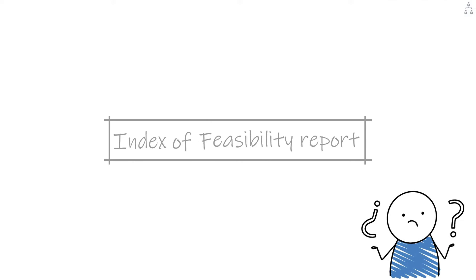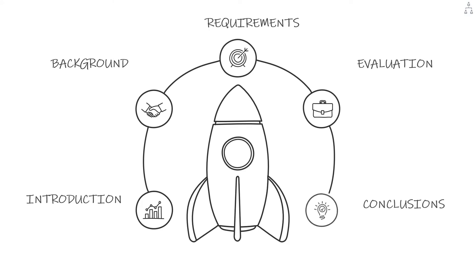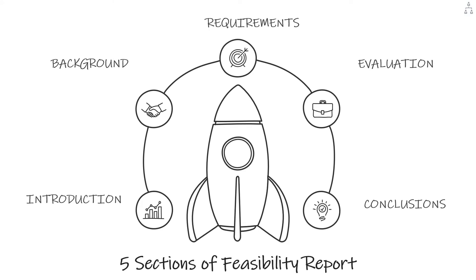So, the next question is: what is the structure of a feasibility report? What are the sections usually included and how do you draft one? Usually, a feasibility report has five sections: introduction, background, requirement, evaluation, and conclusion. Let's understand the detail of each section and help Bob draft his feasibility report.